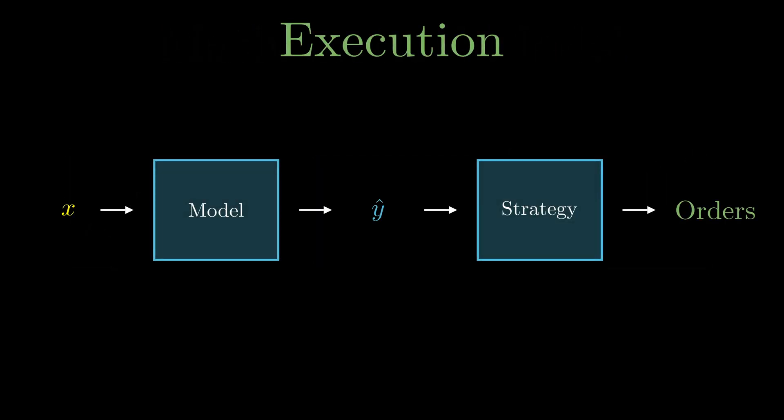The strategy is responsible for the execution of the model's statistical edge. It takes the model's prediction ŷ (y hat) as input and converts it into orders. The strategy is equally as important as the model - this means that the execution of the edge is equally as important as the edge itself. Let's look at an example.